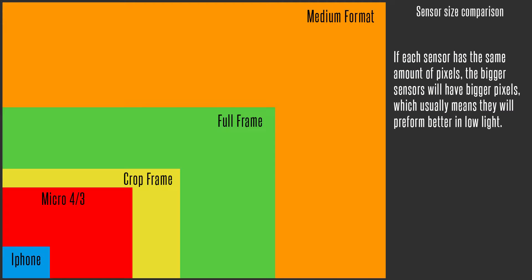My new favorite camera is my medium format — this one is film, but medium format digital cameras exist, they're just around $20,000. The film on this is huge, and medium format digital sensors are massive, so you can cram 100 megapixels on there and still get enough light. Your iPhone pixels are just crammed in super tiny — they can't collect a lot of light because they're so small. Bigger sensor typically means bigger pixels.